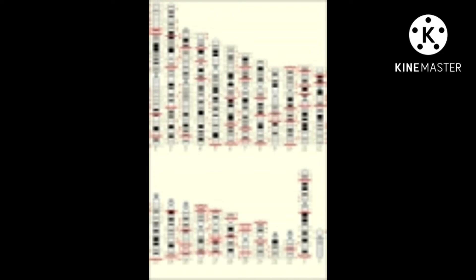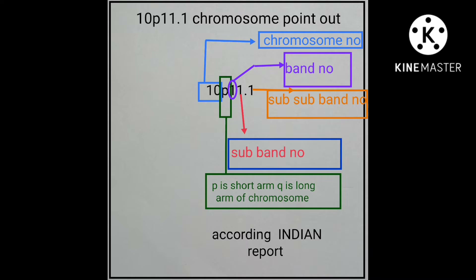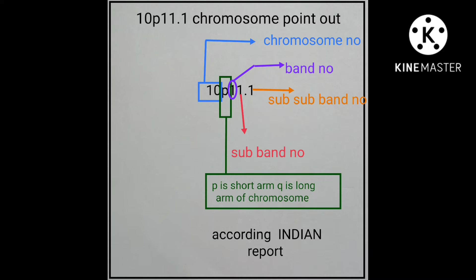Then identify where the gene is present. If it is present in the long arm, write q. If it is present in the short arm, write p. Then identify which locus or which band number the gene is present in. If the gene is present in the first band or first region, write one.